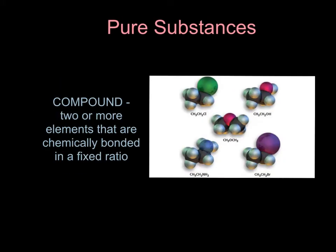The other type of pure substance is a compound. A compound is formed when two or more elements are chemically bonded to each other in a fixed ratio. By fixed ratio, we mean that they always have the same amounts of each element. For example, water is always H2O — it is always made up of two atoms of hydrogen bonded to one atom of oxygen. Here you see some other examples of compounds.